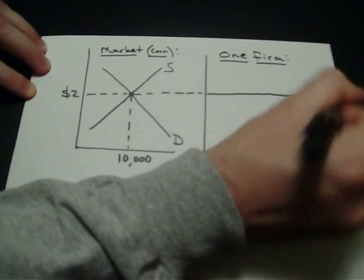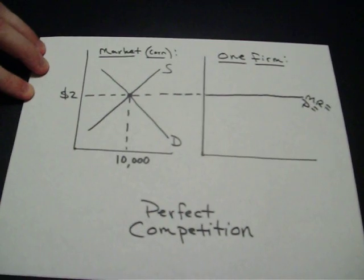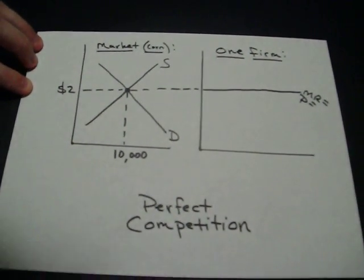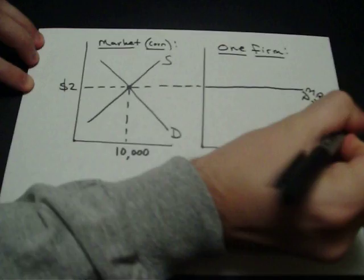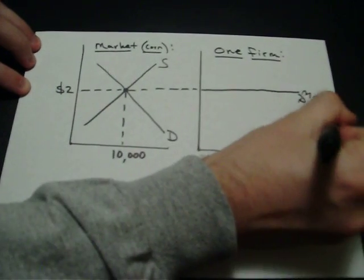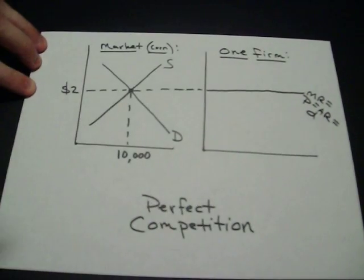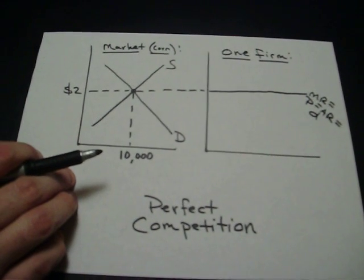It's also, as we said, their price line. If they're selling every single one for $2, then their average revenue would also be $2. So that's also your average revenue line and your demand curve, the consumer's demand curve for that one firm's corn.